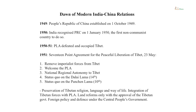At that time, the Chinese had declared their peaceful intentions toward India, saying that India and China have no boundary disputes. Once negotiations were over, a 17-point agreement was signed between Tibet and China. Some of the key points included: remove imperialist forces from Tibet — referring to the Indian troops and advisors — and welcome the People's Liberation Army into Tibet.